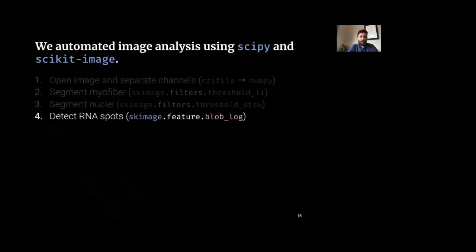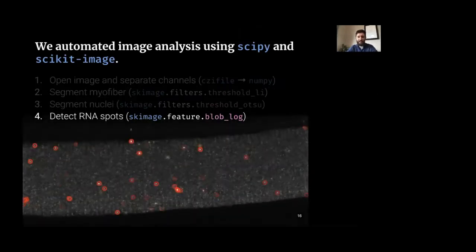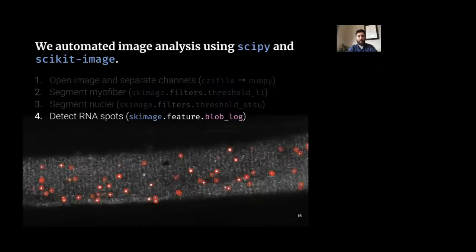Next we needed to detect the RNA FISH spots in the image. There has been quite a lot of work done historically on blob detection in two- and three-dimensional images. We took advantage of the Laplacian of Gaussian function in scikit-image to detect RNA spots, and it does a very good job of detecting spots in our three-dimensional FISH images.